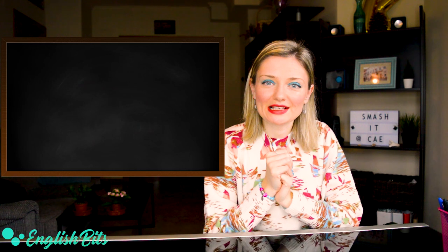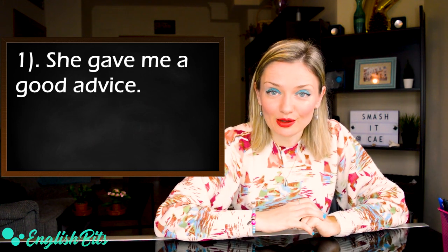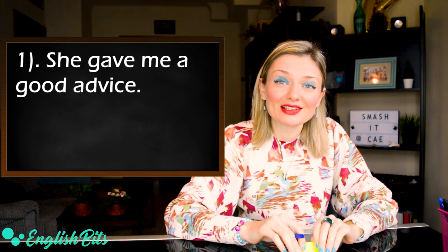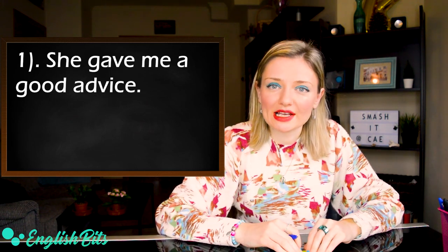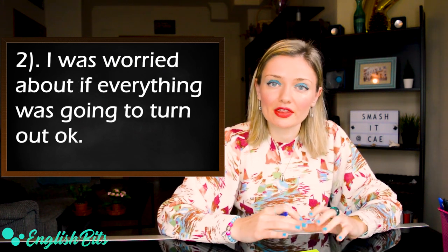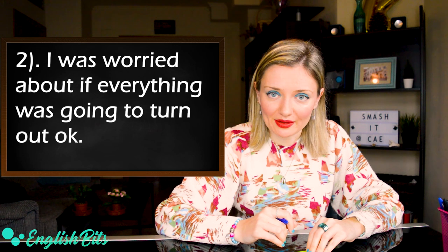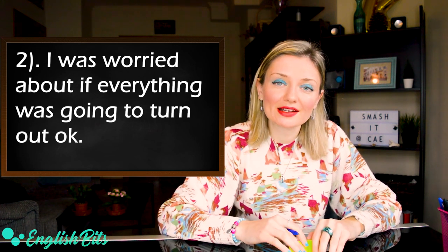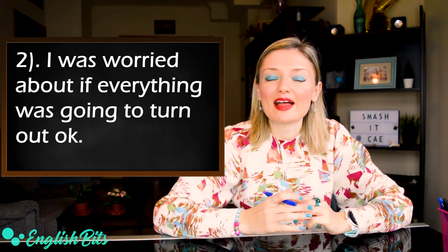So let's start. The first sentence is: 'She gave me a good advice.' Look at the sentence, find the mistake and write it down. Let's move on to our second sentence: 'I was worried about if everything was going to turn out okay.' Find the mistake and correct it.